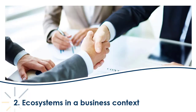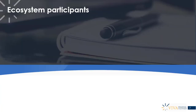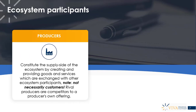Let's take a closer look at the key characteristics and structural components of ecosystems in the business context, starting with ecosystem participants — what kinds of groups and individuals are actually involved, in contrast to the traditional view. First, we have producers. These constitute the supply side of the ecosystem by creating and providing goods and services exchanged with other ecosystem participants. Rival producers are competitors, but producers are not necessarily always geared solely towards selling to customers.